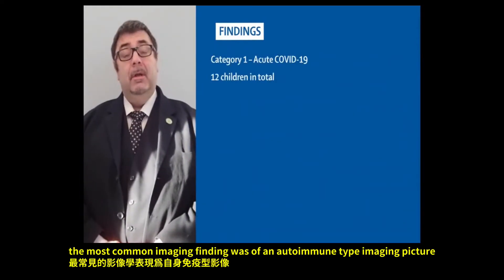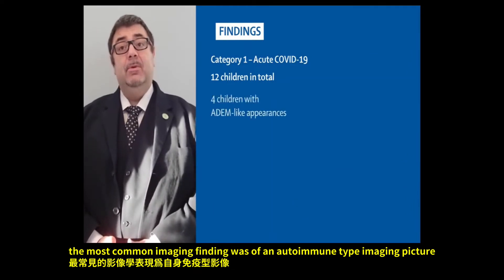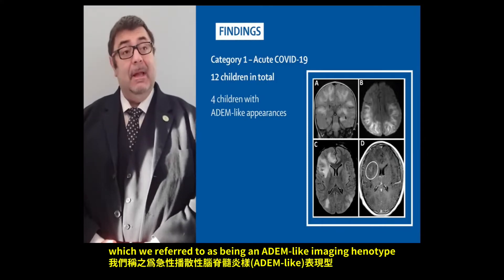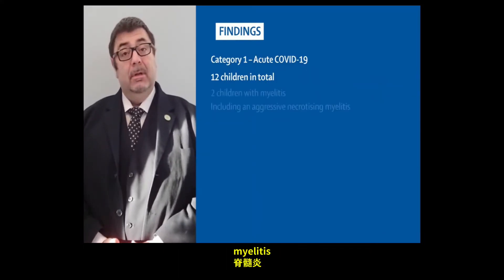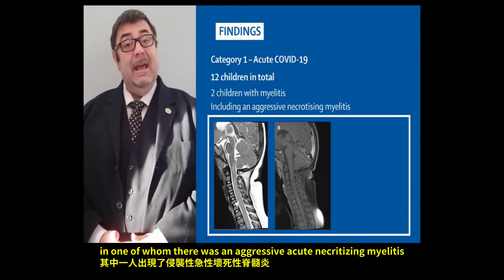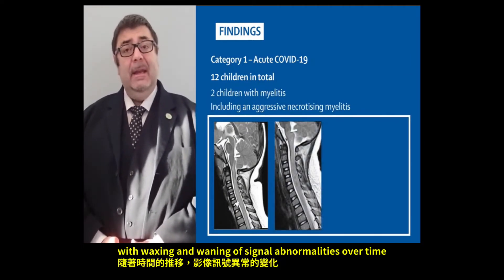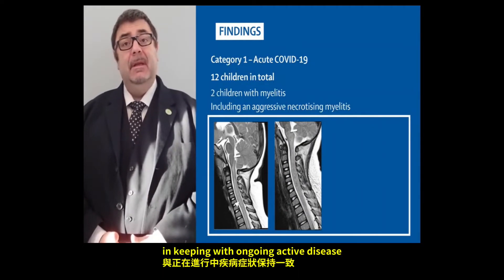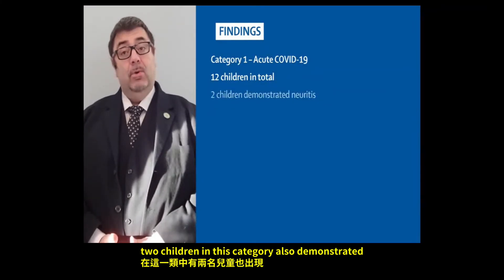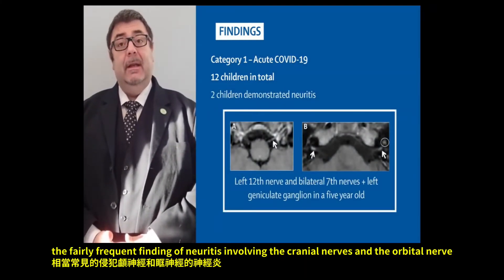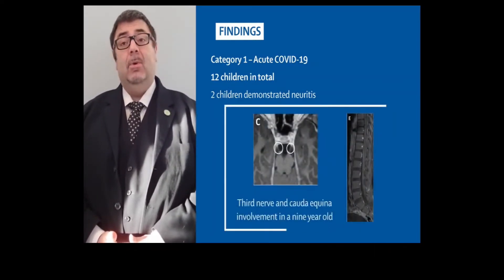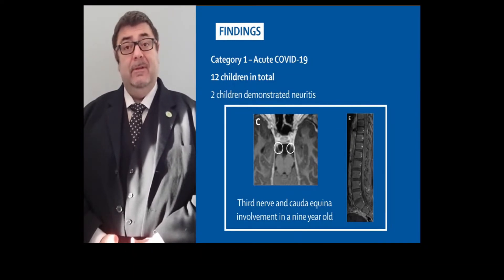In category one, the most common imaging finding was an autoimmune-type imaging picture, which we refer to as an ADEM-like imaging phenotype. Two children had myelitis, in one of whom there was aggressive acute necrotising myelitis with waxing and waning of signal abnormalities over time, in keeping with ongoing active disease. Two children also demonstrated neuritis involving the cranial nerves and/or the cauda equina, which did not always correlate with nerve dysfunction.